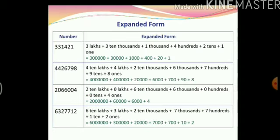Now let us move on to another topic in this chapter: expanded form. You must have done expanded form a number of times before, so in this chapter we will be doing it with 6 and 7 digit numbers. There are two ways in which you can write expanded forms: in words and in numbers. The first number here is 3 lakhs plus 3 ten thousands plus 1 thousand plus 4 hundreds plus 2 tens plus 1 one. In figures: 3 lakhs plus 30,000 plus 1 thousand plus 4 hundred plus 20 plus 1.